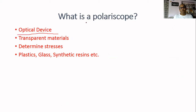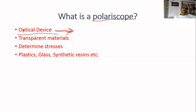Coming to the polariscope — polariscope is actually an optical device. Optical device means wherever we are using light, talking about images, refraction, reflection, scattering, or transmission. By utilizing light as a source of energy and a device through which we produce some images or patterns — that is called an optical device. So polariscope is an optical inspection device.